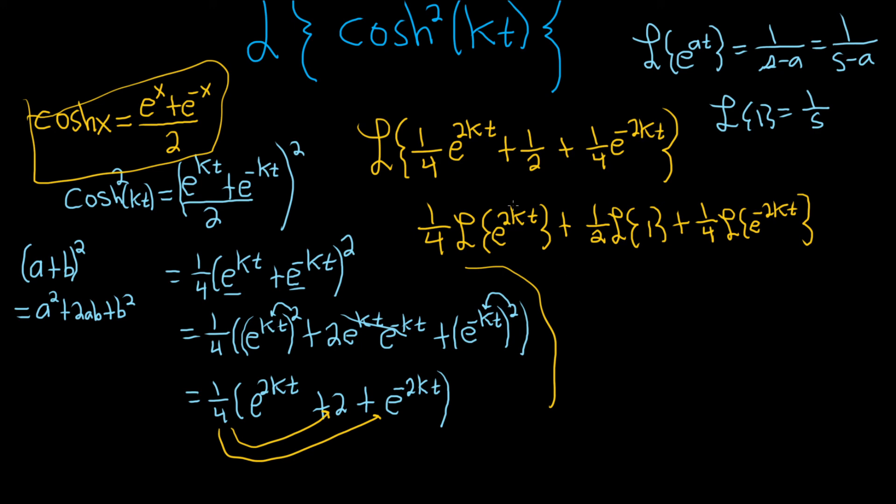So here, for the first one, we'll get one-fourth, and it'll be one over, and then so our a is 2k here. It's a little bit weird. So it's s minus 2k plus one-half, and the Laplace of 1 is 1 over s, so 1 over s, and then plus 1 over 4, and then our a is negative 2k, so when you do s minus negative 2k, it's actually going to become a plus, so it's actually s plus 2k.